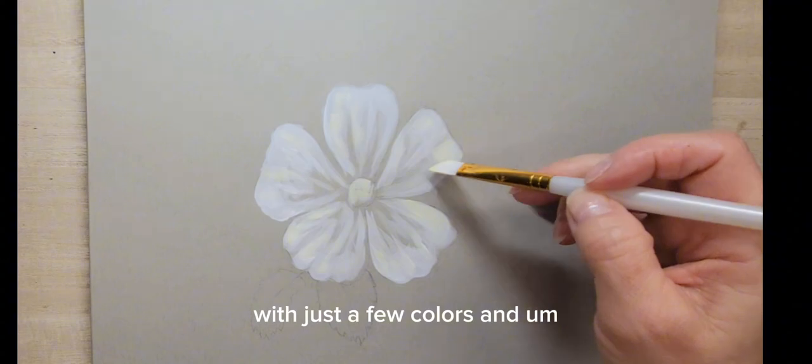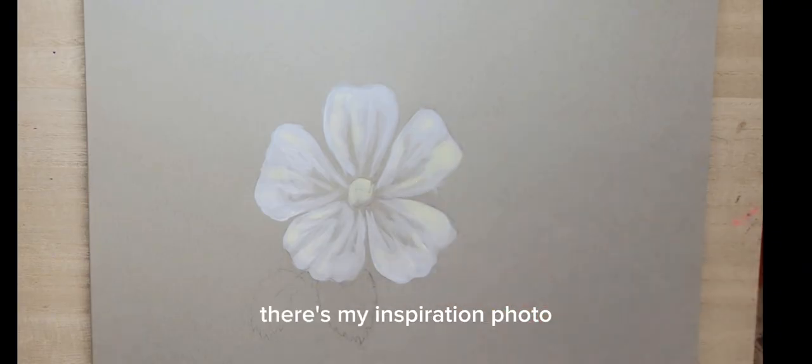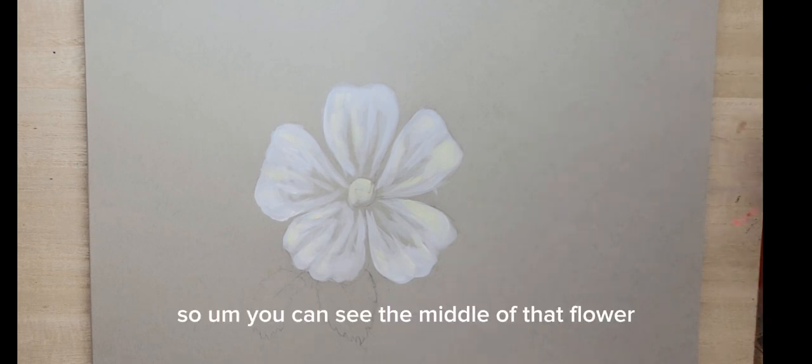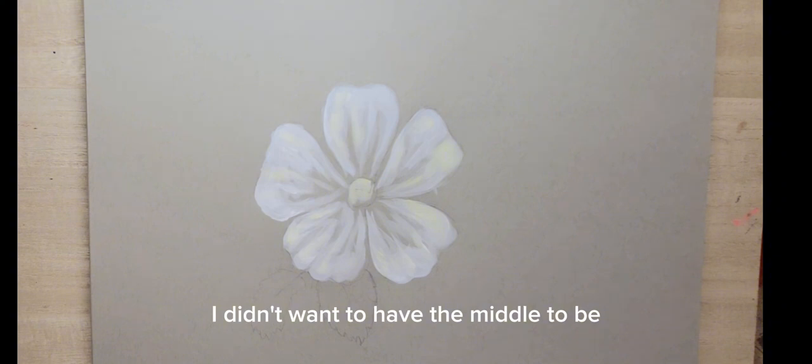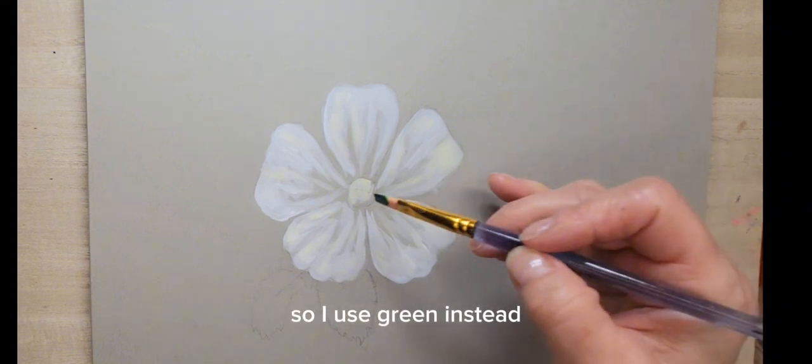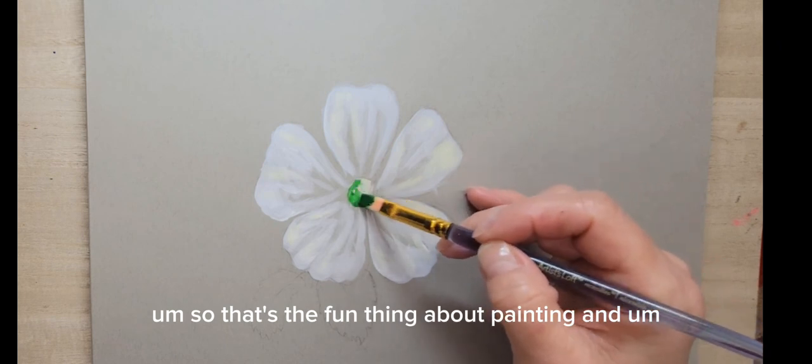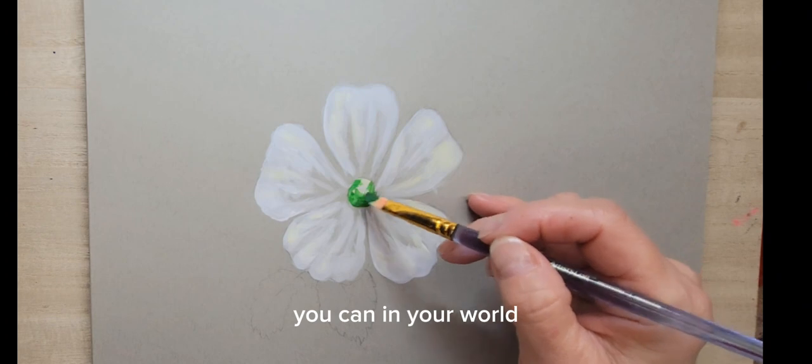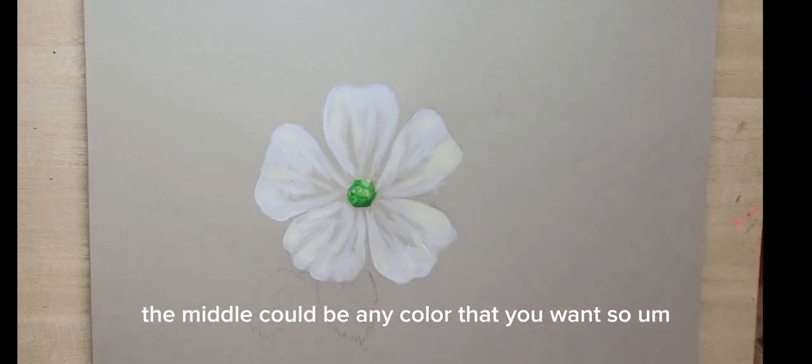There's my inspiration photo, so you can see the middle of that flower was a bright yellow. In my painting I didn't want to have the middle be that bright yellow, so I used green instead. That's the fun thing about painting flowers—in your world, your flowers can be any color you want, the middles could be any color you want.